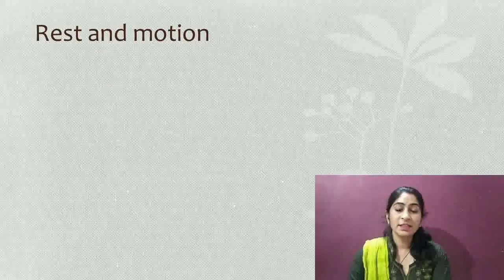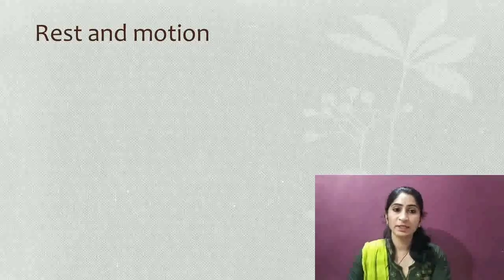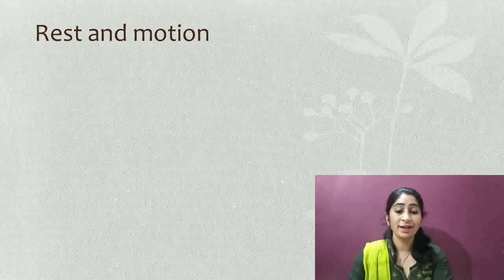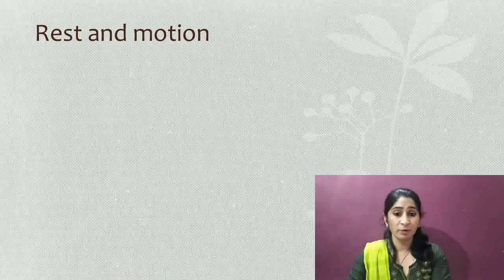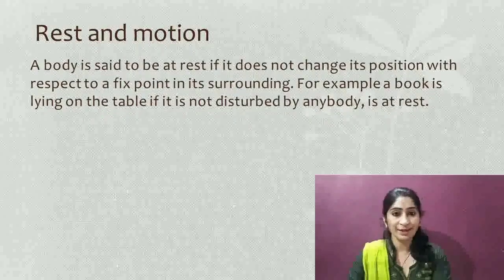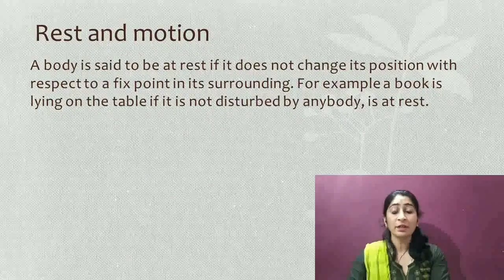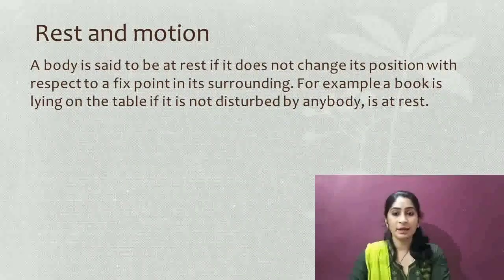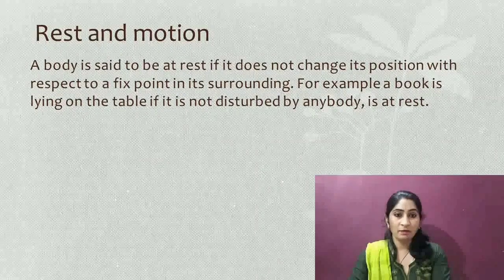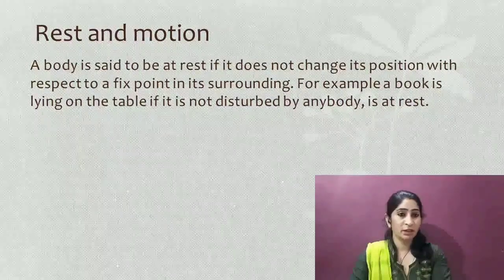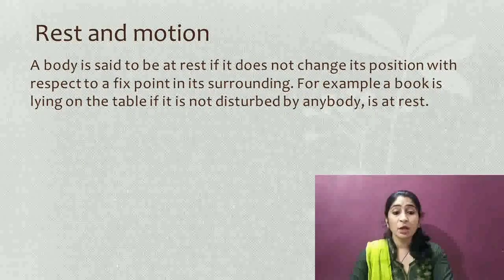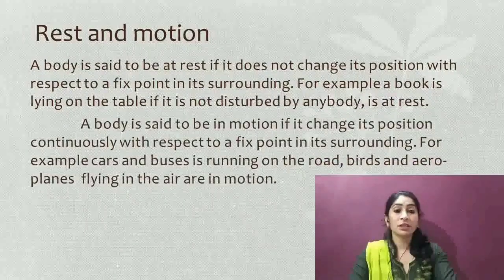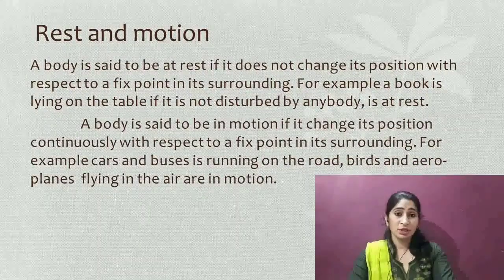If we look around us, we can see things which are in different states — some objects are stationary, that means they are not moving, and some are moving. So how can we differentiate their states? Here I am talking about the states of the object, that is rest and motion. A body is said to be at rest if it does not change its position with respect to a fixed reference point in its surroundings. For example, a book lying on a table is not changing its position with respect to the table or the room in which it is kept.